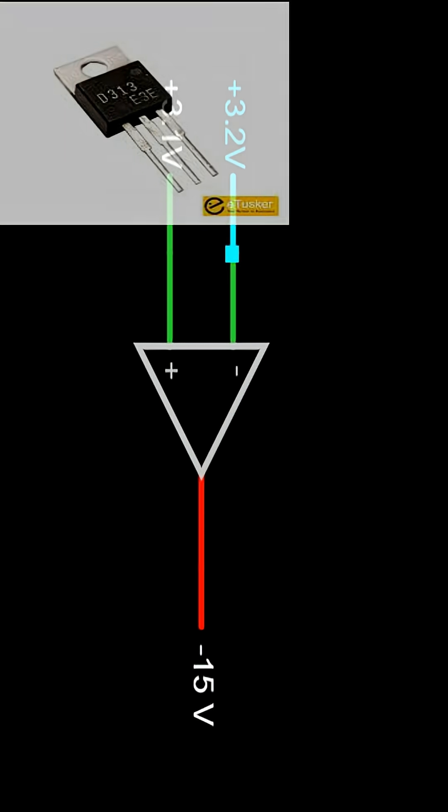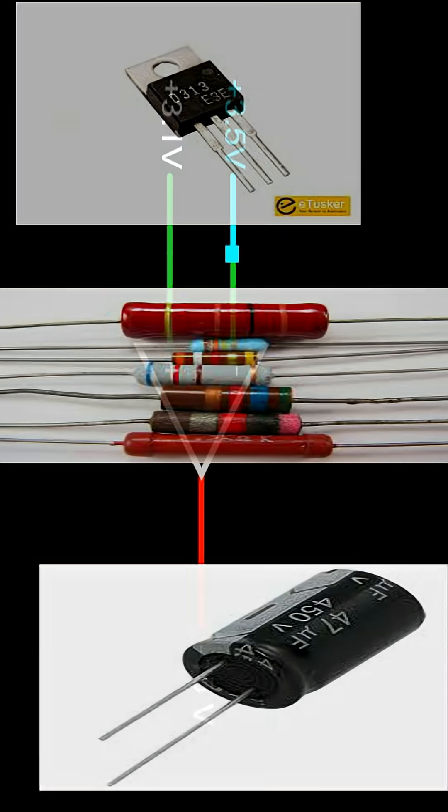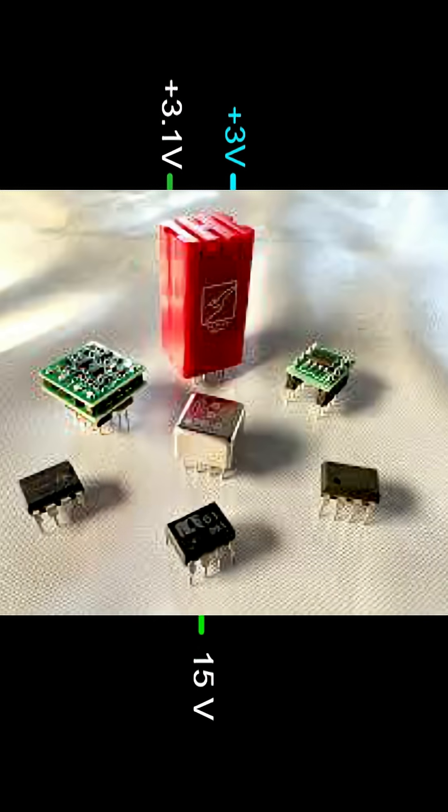Inside an op-amp, there are many transistors, resistors, and capacitors connected together to form a differential amplifier stage. That's what gives its high gain and precision.